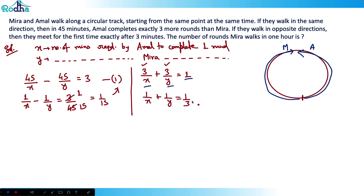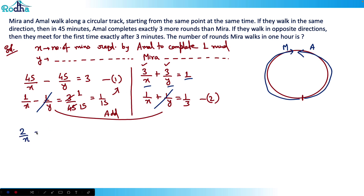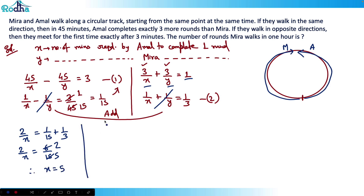Now I'll add Equation 1 and Equation 2. Adding them: the 1/y terms cancel, giving 2/x = 1/15 + 1/3 = 1/15 + 5/15 = 6/15 = 2/5. Therefore x = 5. Substituting back into Equation 2: 1/5 + 1/y = 1/3, so 1/y = 1/3 − 1/5 = 5/15 − 3/15 = 2/15. Therefore y = 15/2 = 7.5 minutes.